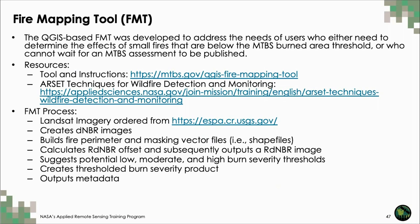The QGIS Fire Mapping Tool, or FMT, was created in partnership with MTBS to address the needs of users who may need to determine the effects of small fires below the MTBS burned area threshold, or who cannot wait for an MTBS assessment to be published. It facilitates identification and processing of Landsat imagery for a user-specified area of interest, generates fire perimeters, and performs thresholding of Landsat imagery to produce burn severity images. This tool is fully open source and freely distributed, available for QGIS 2 and QGIS 3, though use is only available for Windows users.